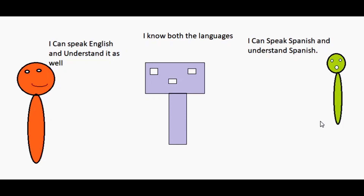Let's say we have two people: the orange guy and the green guy. The orange guy can speak and understand English but cannot understand Spanish, whereas the green guy can speak and understand Spanish but cannot understand English. There is a guy in between — the blue guy — who understands both Spanish and English. Now, if the orange guy has to communicate with the green guy, will he be able to? That would be a no.